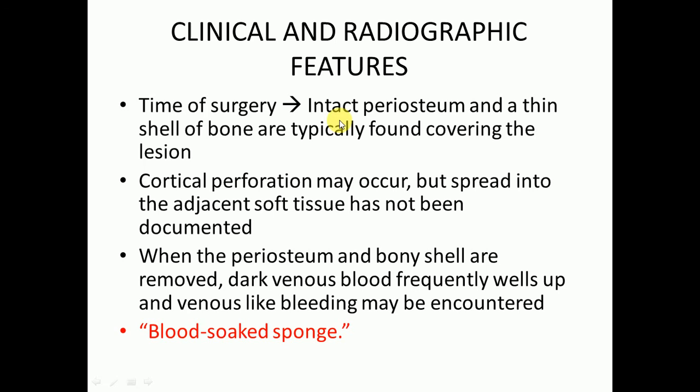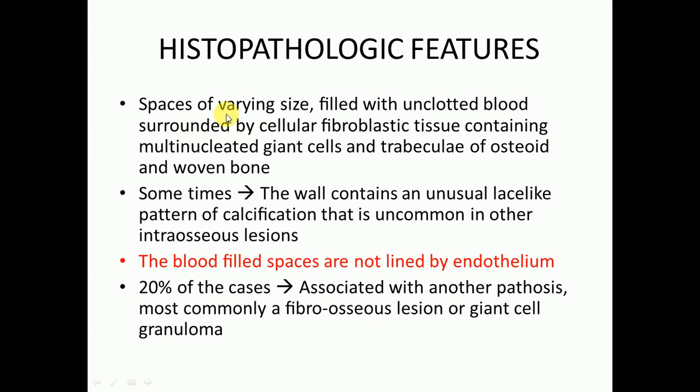Cortical perforation may occur, but spread into the adjacent soft tissue has not been documented. When the periosteum and bony shell are removed, dark venous blood frequently wells up and venous-like bleeding may be encountered, giving the lesion a blood-soaked sponge-like appearance.